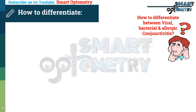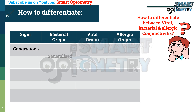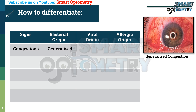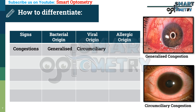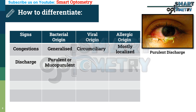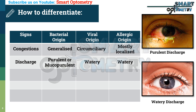Now, how to differentiate between viral, bacterial, and allergic conjunctivitis. Congestion: in bacterial origin, congestion is generalized all over the conjunctiva but more prominent in the peripheral area. In viral origin, it is circumciliary — more around the cornea compared to the periphery. In allergic origin, the congestion is mostly localized. Discharge: in bacterial origin, discharge is purulent or mucopurulent. In viral and allergic origin, it is watery.